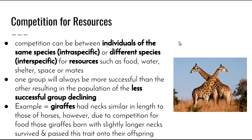Lastly, we need to look at competition for resources. Competition can be between individuals of the same species, which is referred to as intraspecific competition, or between individuals of different species, which is known as interspecific competition, for resources such as food, water, shelter, or living space. This can influence the evolution of organisms and can eventually lead to the decline of the less successful individuals or species.